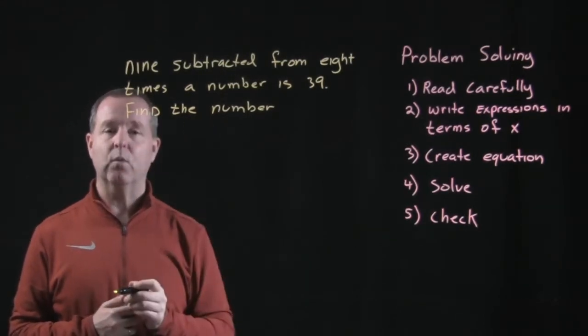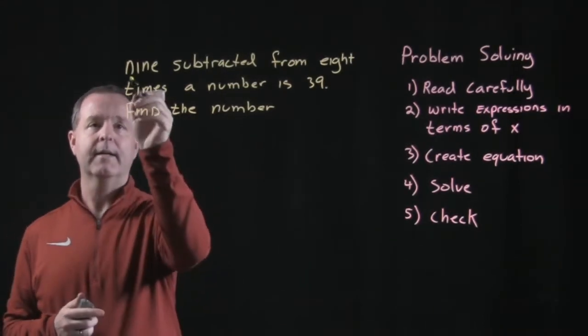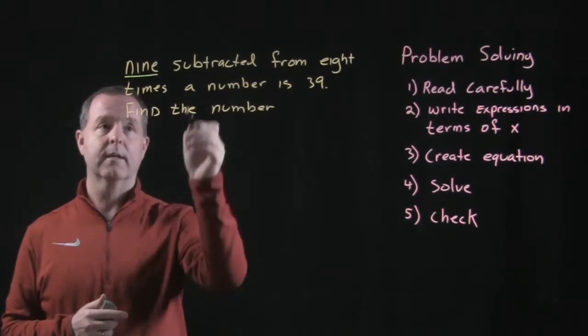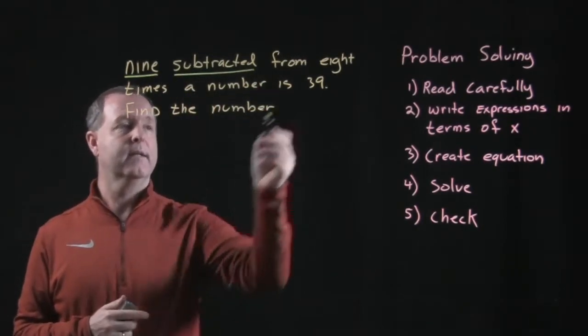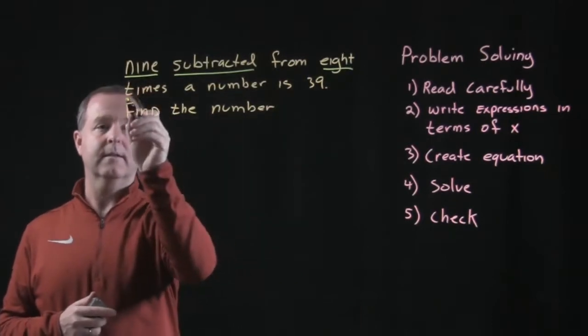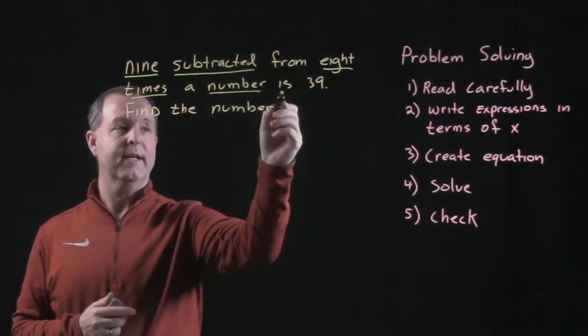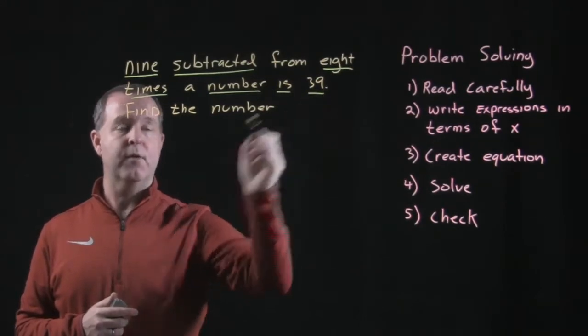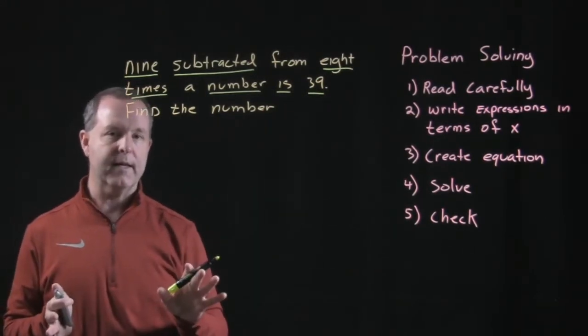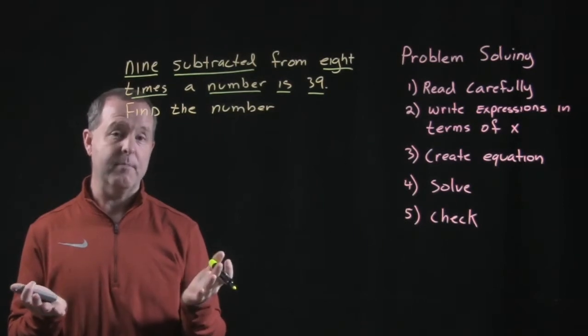How can we find some other keywords here? 9 is a keyword. Subtracted is a keyword. 8 times is a keyword. Number is a keyword. Is is a keyword. 39 is also a keyword. So all those are the keywords. Now we just got to figure out what do they mean.